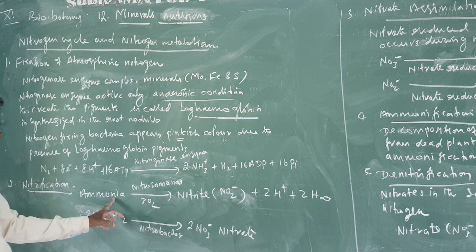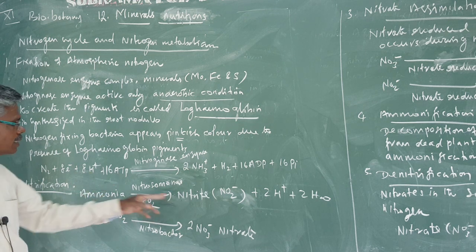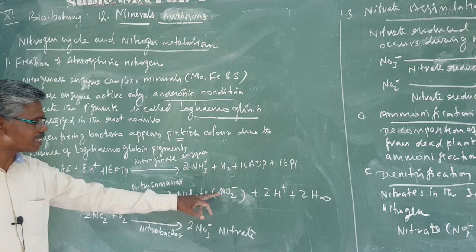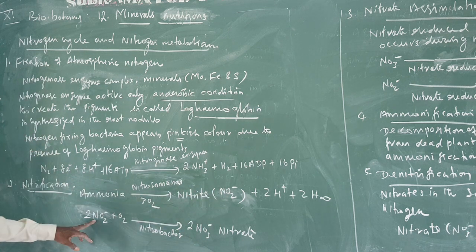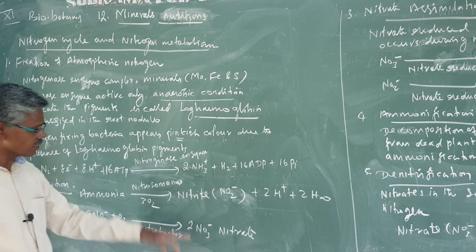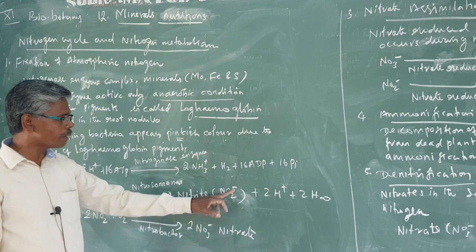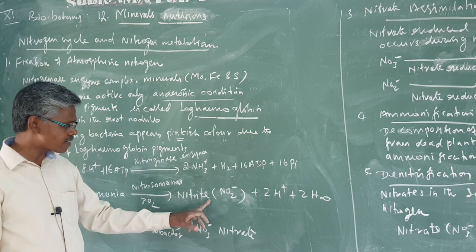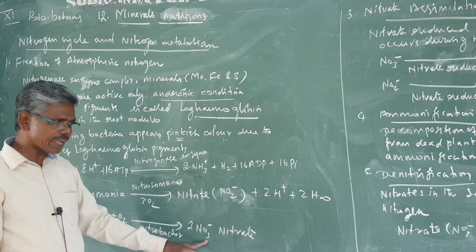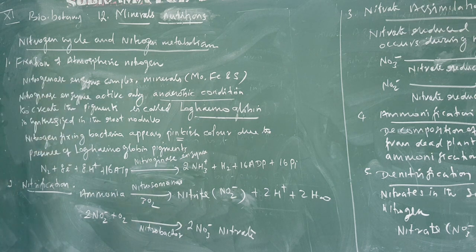In the soil, ammonia is converted into nitrite. Nitrite means NO₂⁻. Again, nitrite is converted into nitrate, NO₃⁻. So nitrite (NO₂⁻) is converted into nitrate (NO₃⁻), with the addition of two protons and two water molecules.